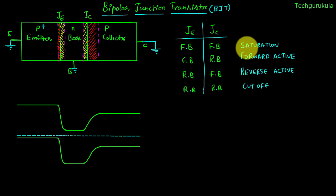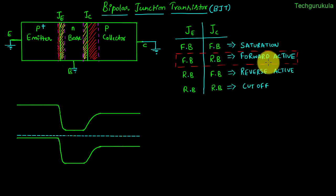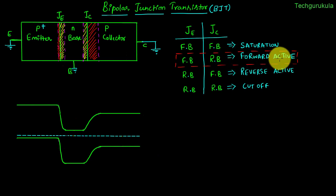To summarize, we have four modes of operation depending on how we bias the two junctions: the emitter junction and the collector junction. Out of all these modes, forward active mode is of great importance because it makes signal amplification possible. In this video we will see BJT under forward active mode.